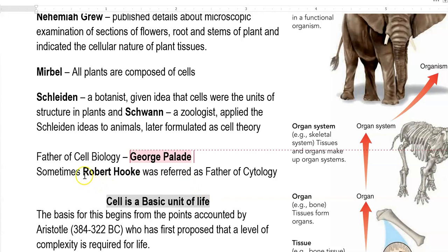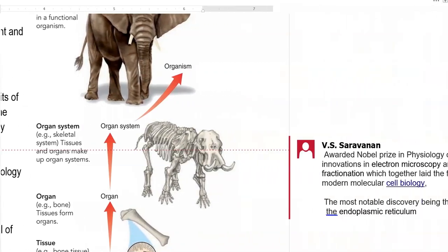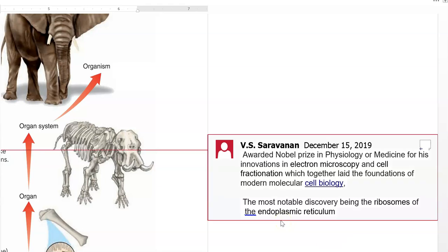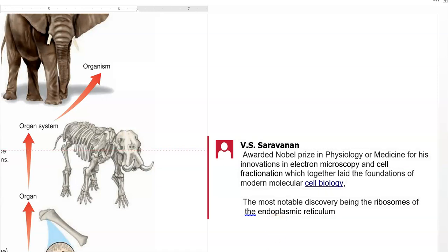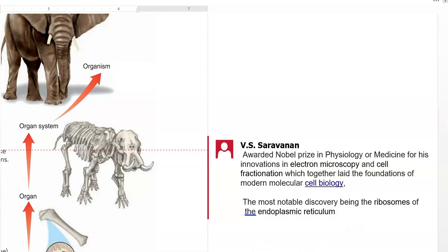However, sometimes Robert Hooke is also referred to as the father of cytology — that is the older term. Robert Hooke is the father of cytology, while the title father of cell biology refers to George Palade's contributions in cell fractionation and electron microscopy, which laid a strong foundation for cell biology. Other notable discoveries of George Palade include the ribosomes attached to the endoplasmic reticulum, which we now refer to as rough endoplasmic reticulum — findings for which he was awarded the Nobel Prize in Physiology and Medicine.